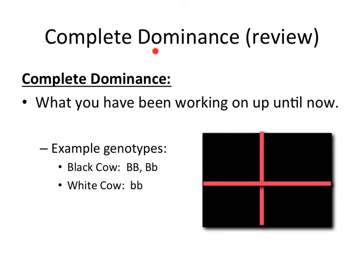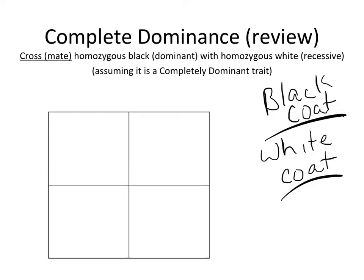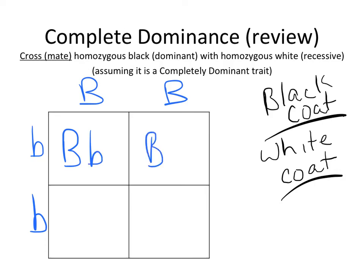Let's review complete dominance in Mendelian genetics. Everything we've been working on so far deals with the fact that parents are still going to contribute an allele towards a genotype — you get one letter or gene from each parent. The laws of segregation state that each parent will pass on one of their own alleles for each gene. Everything up until now has been about complete dominance, meaning one form of a gene will always cover up a different form. For example, dealing with coat color in cattle, if you cross a homozygous black coat with a homozygous white coat, all of the offspring would show the black phenotype.